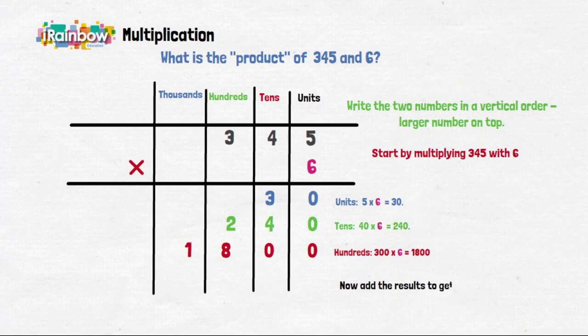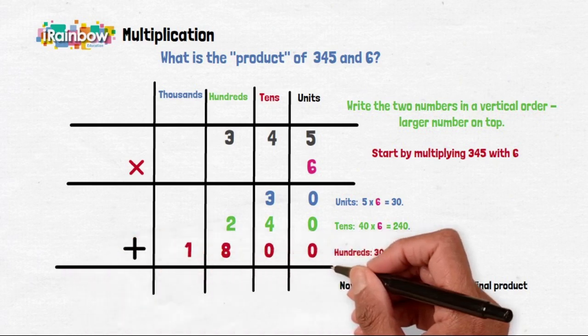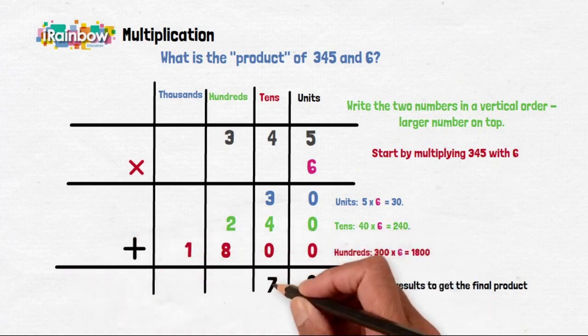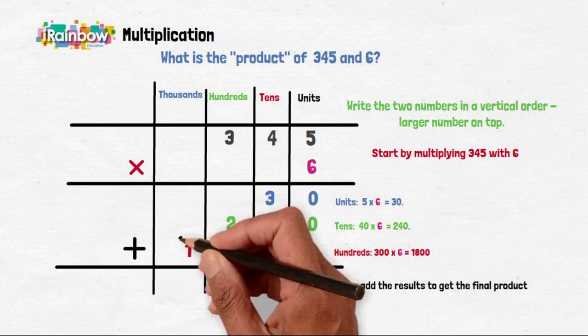Now we add our columns to get the final result. 0 plus 0 plus 0 is 0. 4 plus 3 is 7. 8 plus 2 is 10.